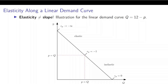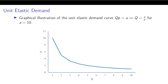The price elasticity of demand is typically negative because the demand curve is downward sloping — if price increases, quantity decreases. A demand curve that is unit elastic everywhere has a specific shape: bulged toward the origin. This corresponds to q × p = constant, which can be rewritten as q = a/p. Shown here for a = 10, the slope is steeper when price is high and quantity is low, and flatter when quantity is high and price is low. For this curve the price elasticity of demand equals minus one at every point.